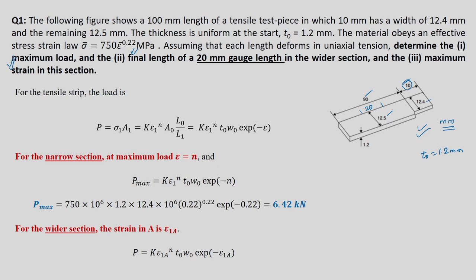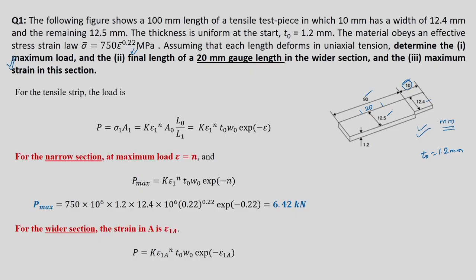There will be one maximum load P_max for the entire strip that we have to find out. In the wider section — the 12.5 mm part — we pick a gauge length of 20 mm at the center and find what strain is encountered during this tensile test. This is equivalent to what we studied: defining a thickness heterogeneity f equals TB/TA, but here instead of thickness heterogeneity, we have a reduction in width.